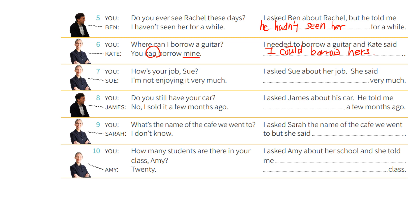Number seven: You say, 'How's your job, Sue?' Sue says, 'I'm not enjoying it very much.' I asked Sue about her job. She said that she wasn't enjoying it very much. Number eight: You say, 'Do you still have your car?' James says, 'No, I sold it a few months ago.' I asked James about his car. He told me that he had sold it a few months ago.